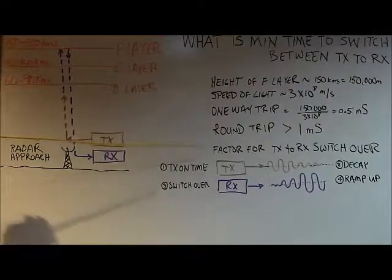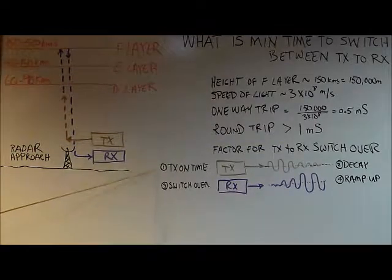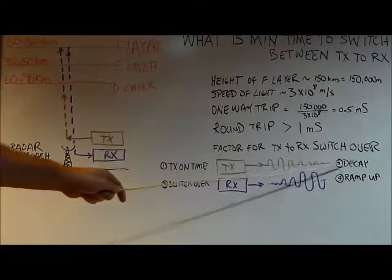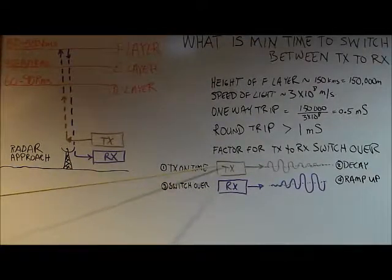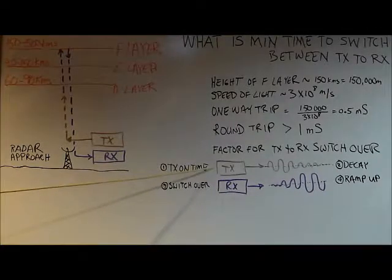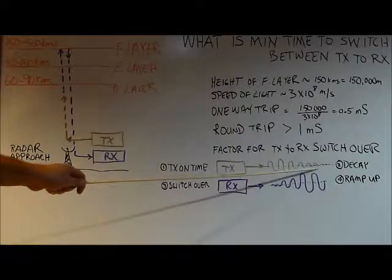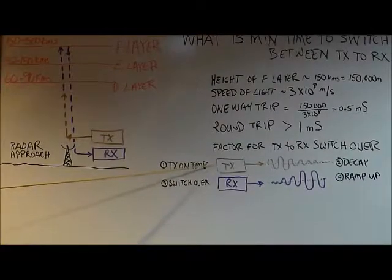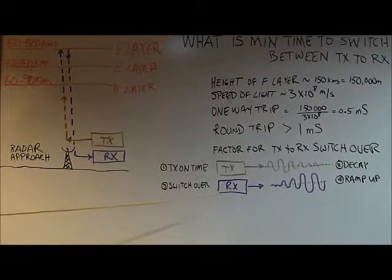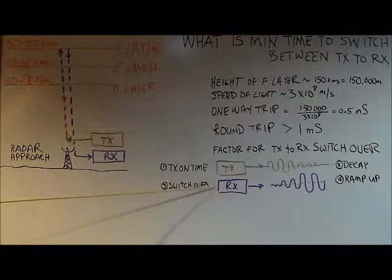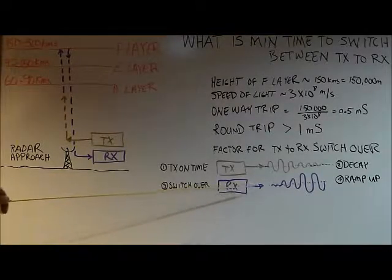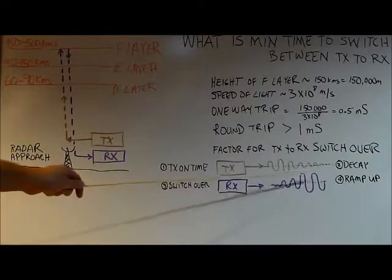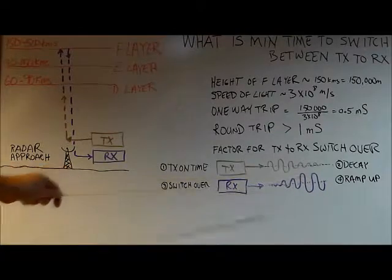There are four factors for switching from transmit to receive. First, how long the transmitter is on. Second, the decay — how long it takes for the signal to decay out of the transmitter after I turn it off. Third, the actual switchover time — how long it takes to switch from transmit to receive. And finally, the ramp-up time — the time it takes for a signal entering the receiver to reach a detectable level.